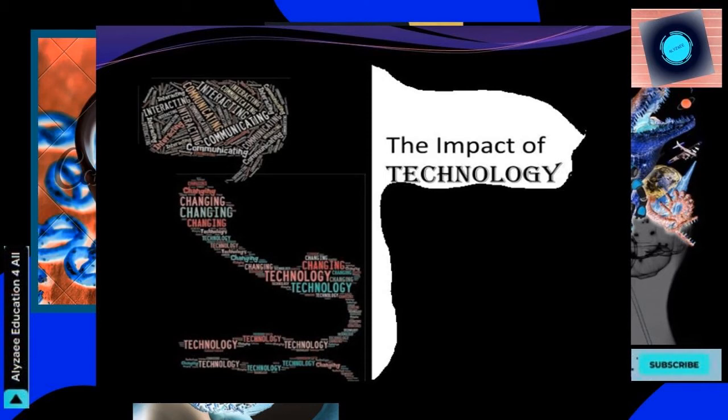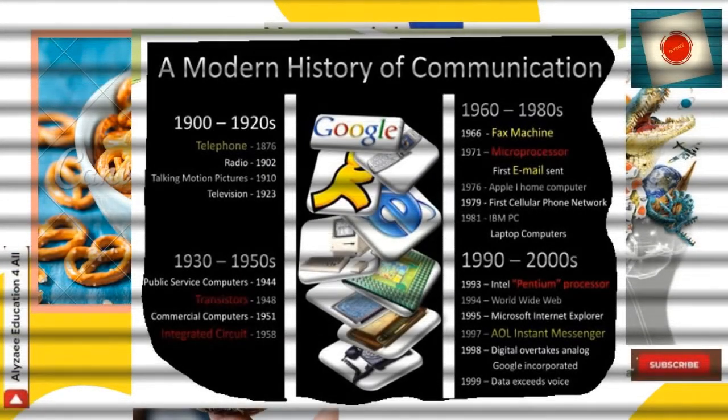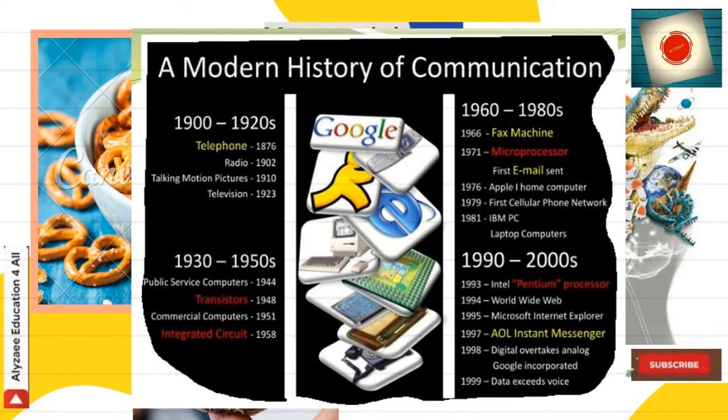Motion pictures came in 1910, television in 1923. From the 1930s to 1950s, public service computers arrived in 1944, transistors in 1948, and commercial computers came after innovation in 1951 — room-sized big computers which were used — marking the start of a new era of technology.